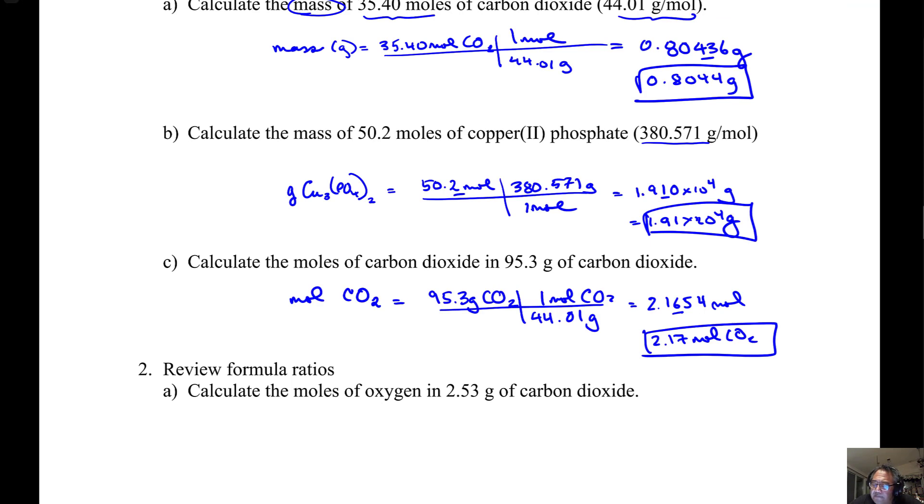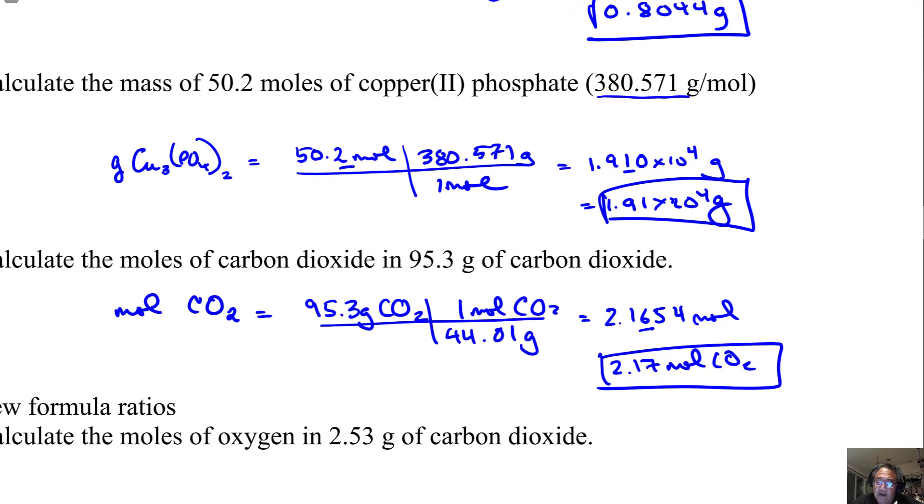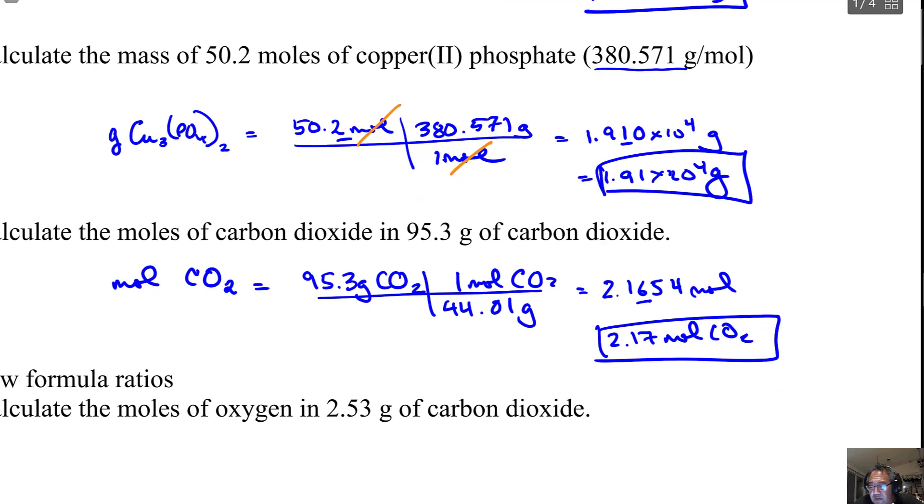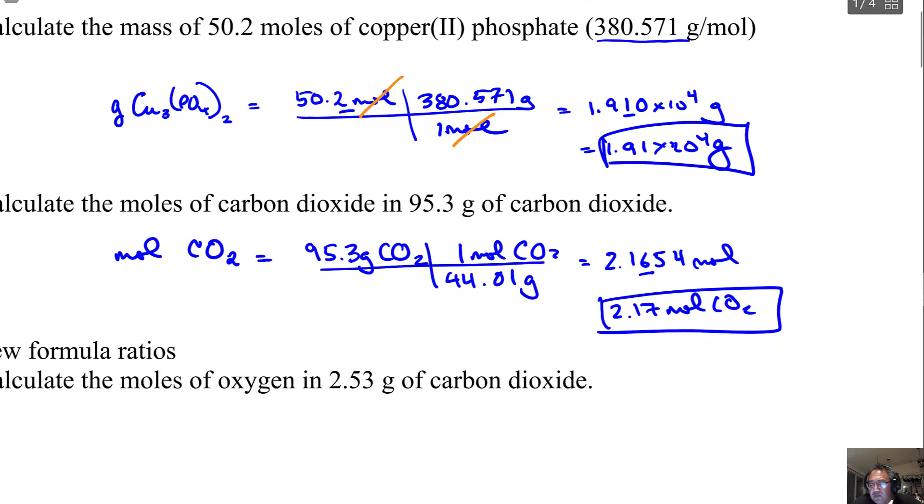So I finished the conversions for parts B and C. For part B, 50.2 moles times 380.571 grams per mole, I set it up so my units will cancel like this. I'll end up with 1.91 times 10 to the 4th grams, rounded to three significant figures.